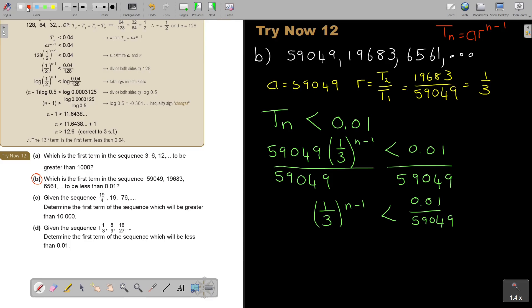And now I go and I take logs on both sides. Did you see that? And now, as soon as I was taking logs on both sides, now I can bring that down. So basically, I'm going to say now N minus 1 log 1 third equals log 0.01 divide 59049. Now this is very important.